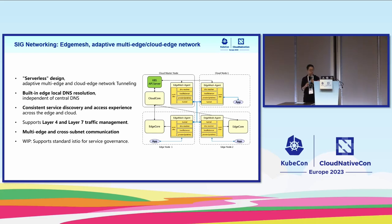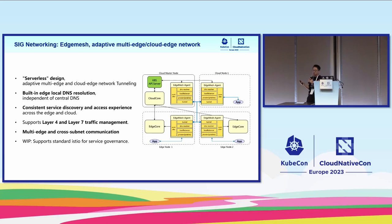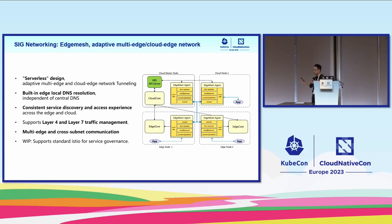For the SIG networking and data plane — EdgeMesh — last year it had a single point of failure in the EdgeMesh server. During past releases we refactored the whole architecture, so now it's adaptive: it will automatically choose one of the EdgeMesh agents as a helper node to forward control information. There are multiple layers: if a pod needs to talk with another pod across different private networks, we have a P2P layer to build a tunnel between the two networks.